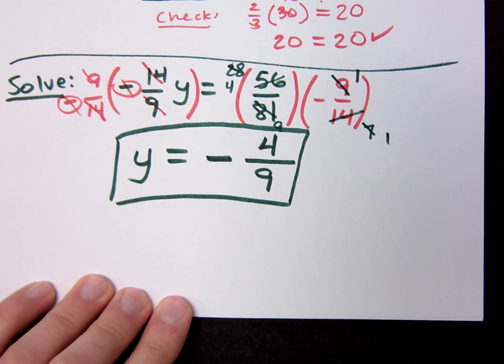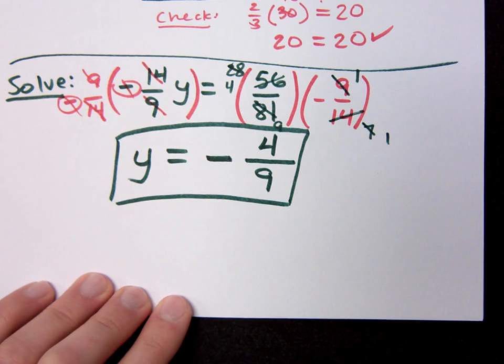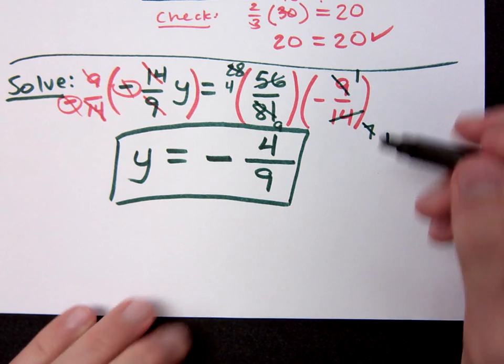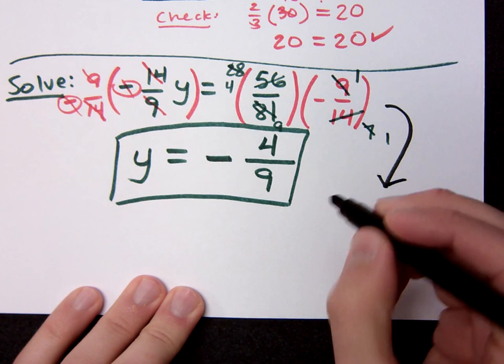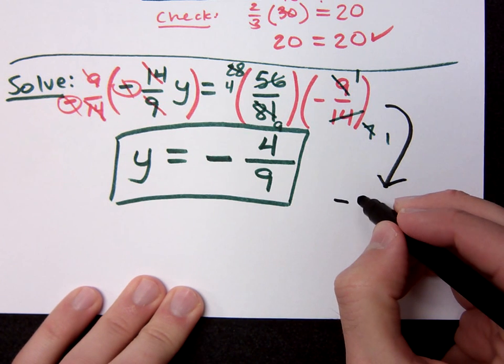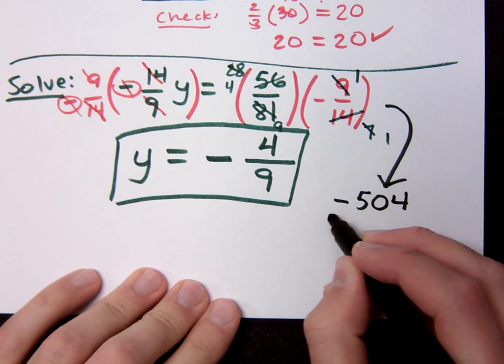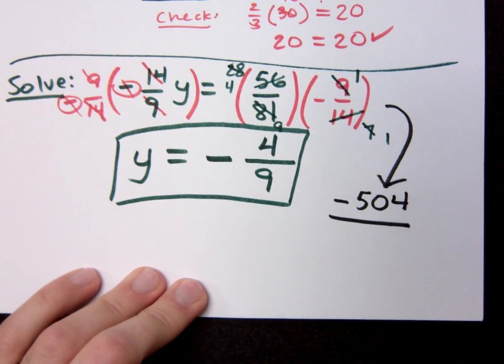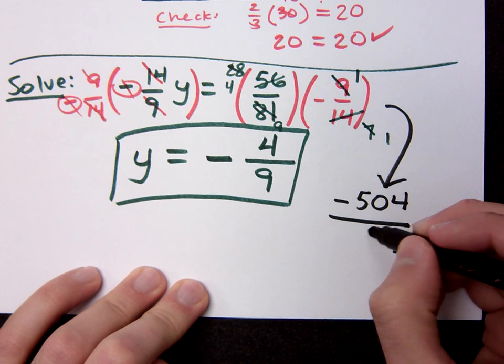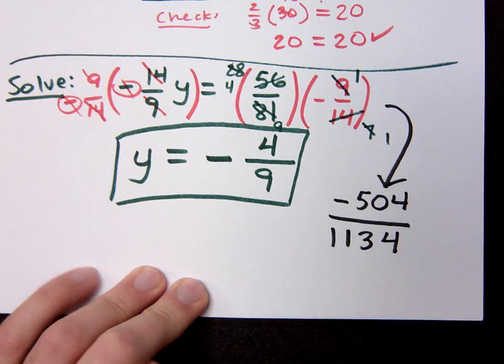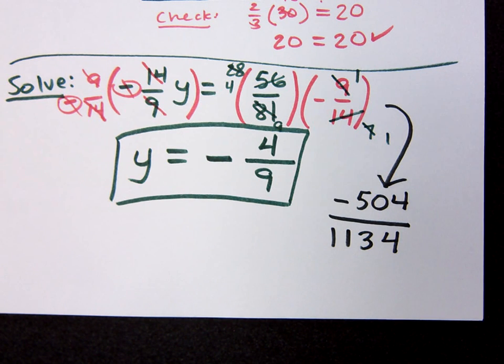So if I do the reducing beforehand, I don't have to deal with large numbers. Do you know what would happen if you actually multiplied all this out? It's not going to look pretty. If you had multiplied it out, you would have had negative 504 over, when you do 81 times 14, you would reduce 504 over 1134. Is that what you really wanted to do? No. Keep the numbers small, keep them manageable, and it makes your life a lot easier.